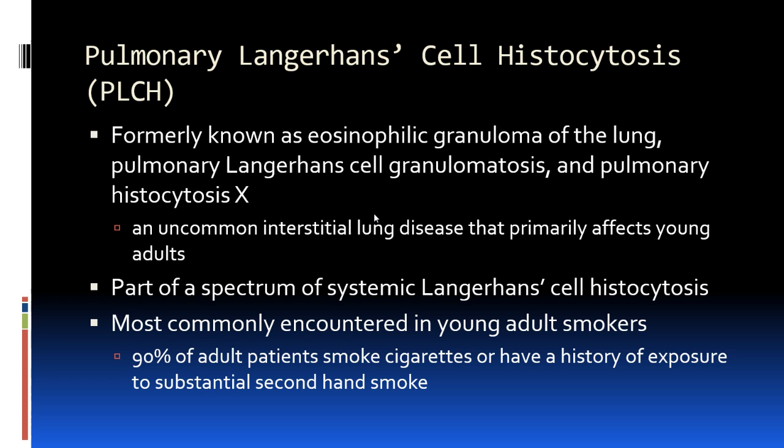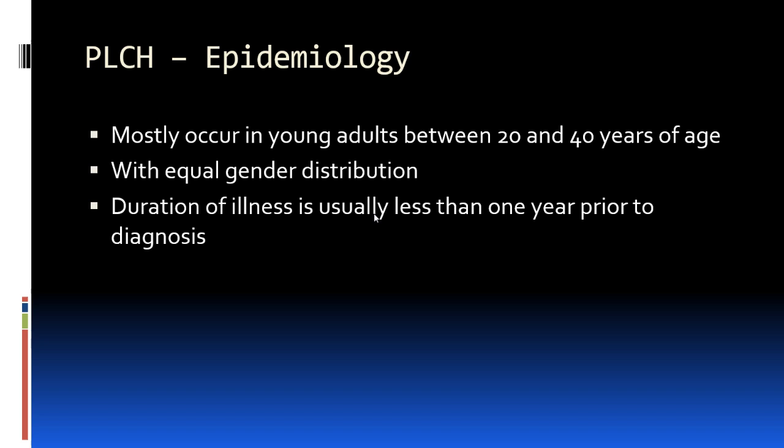Moving on to pulmonary Langerhans cell histiocytosis, or PLCH — formerly known as eosinophilic granuloma of the lung, pulmonary Langerhans cell granulomatosis, or pulmonary histiocytosis X. It is an uncommon cystic lung disease primarily affecting young adults, and it is part of a spectrum of systemic Langerhans cell histiocytosis that can affect many organs. It is most commonly encountered in young adult smokers — up to 90% of adult patients with PLCH have a history of smoking.